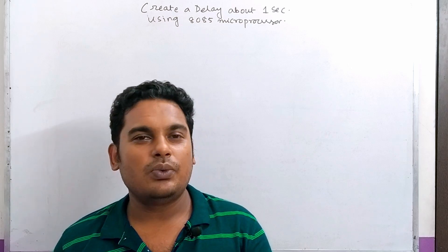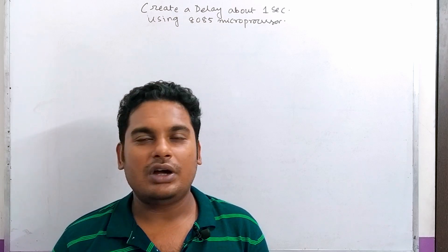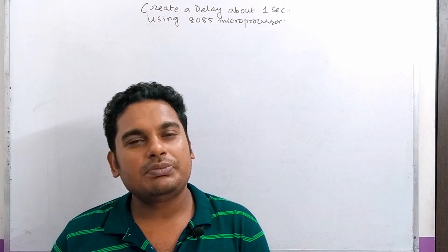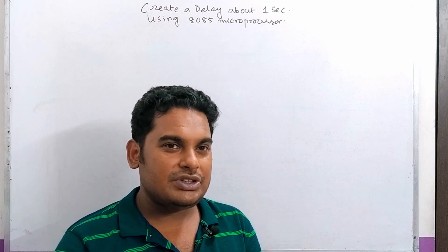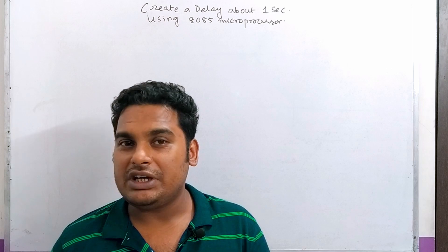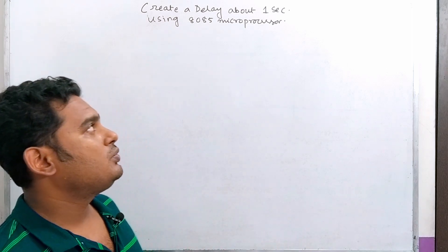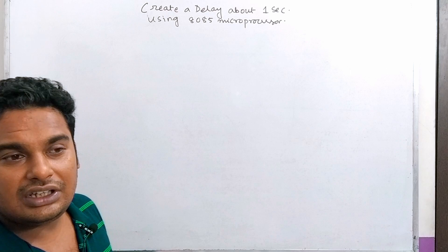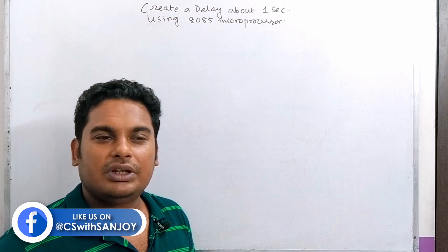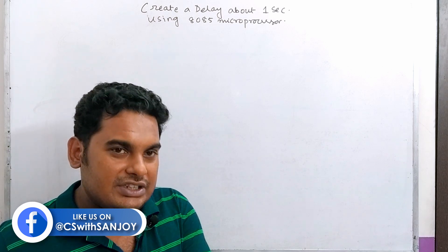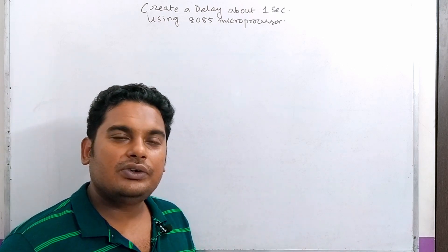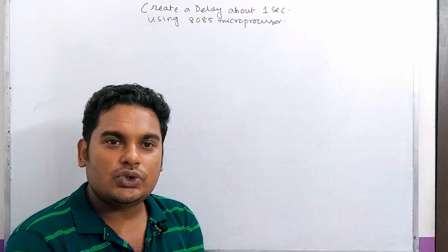Today we have done the counter and delay chapter, which is very important. We have done delay in the microprocessor already — single register use and delay, register pair use and delay. Today we will cover one more: the nested delay, including single counter, double counter, and register pair use and delay.